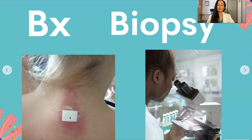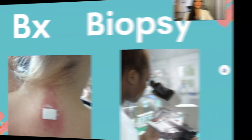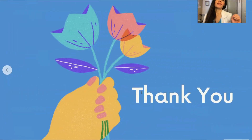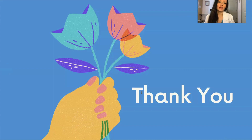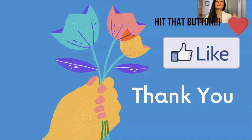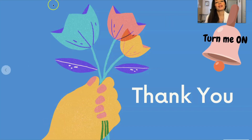When they take a biopsy — let's say you have a suspicious mole — they take a biopsy, look at it under the microscope, and determine if it has cancerous or malignant cells. If it has malignant cells, they have to go in and remove more of the area. That is all of our medical abbreviations for the letter B. Thank you so much for watching. Make sure you hit the like button, subscribe, and turn on that notification bell. Bye.